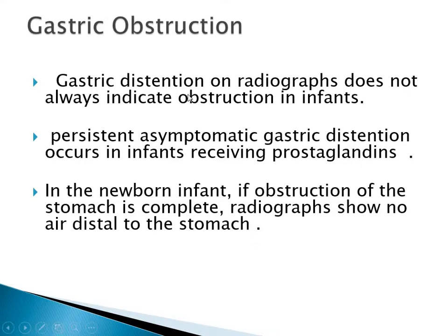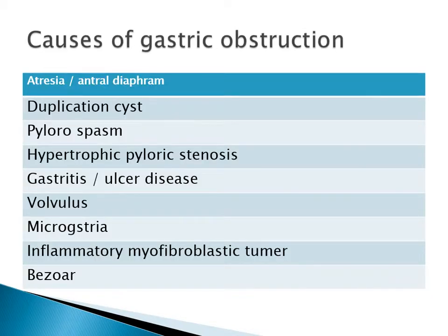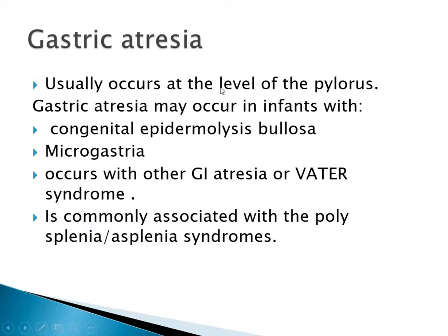Gastric obstruction: gastric distension on radiographs doesn't always indicate obstruction in infants. Persistent asymptomatic gastric distension can occur in infants receiving prostaglandin. In the newborn, if obstruction of the stomach is complete, radiographs show no air distal to the stomach. Causes of gastric obstruction include atresia, duplication cysts, pylorospasm, hypertrophic pyloric stenosis, gastritis or ulcer, volvulus, microgastria, inflammatory myofibroblastic tumor, and bezoars. Gastric atresia usually occurs at the level of the pylorus and may occur in infants with congenital epidermolysis bullosa, and is commonly associated with polysplenia or asplenia syndrome.